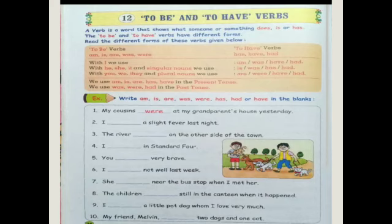So students, for using to be and to have verbs, you have to see whether it is a singular noun or plural noun, and whether the sentence is in present tense or past tense. Then use the proper verb to make the sentence meaningful.